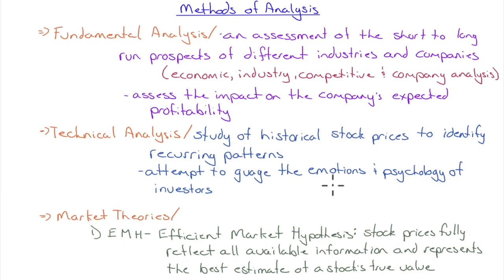Let's look at some market theories. The big one, and probably the most controversial, is the Efficient Market Hypothesis. Stock prices fully reflect all available information and represent the best estimate of a stock's true value.